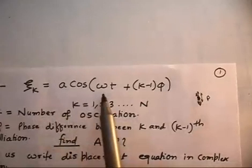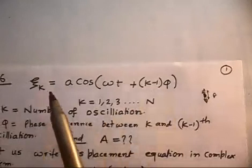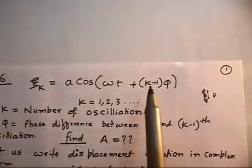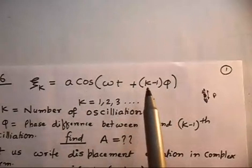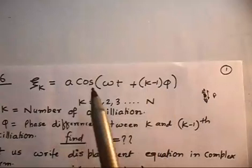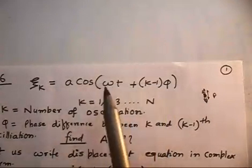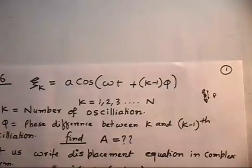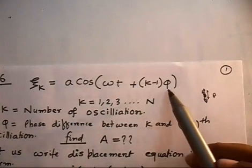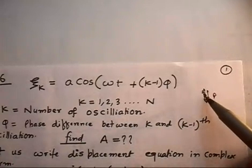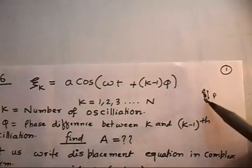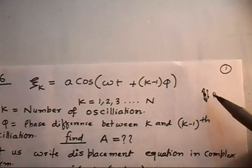Any oscillation is given by x_k = a·cos(ωt + (k−1)φ). So x_1 = a·cos(ωt) (phase = 0), x_2 = a·cos(ωt + φ), x_3 = a·cos(ωt + 2φ), x_4 has 3φ, and so on. The amplitude remains the same but the phase difference changes: 0, φ, 2φ, 3φ, 4φ — all waves reaching the point have the same time period but different phases differing by φ.